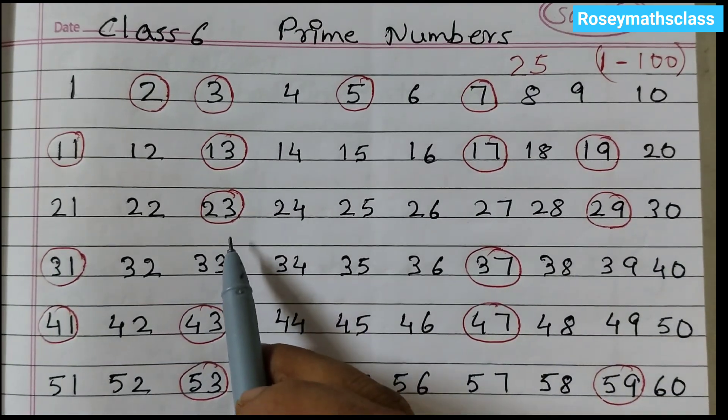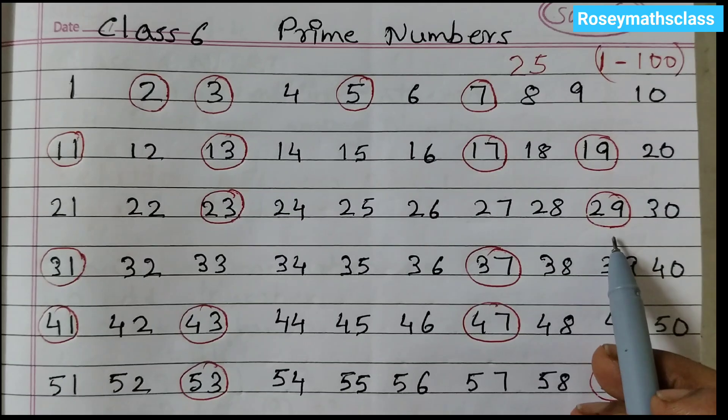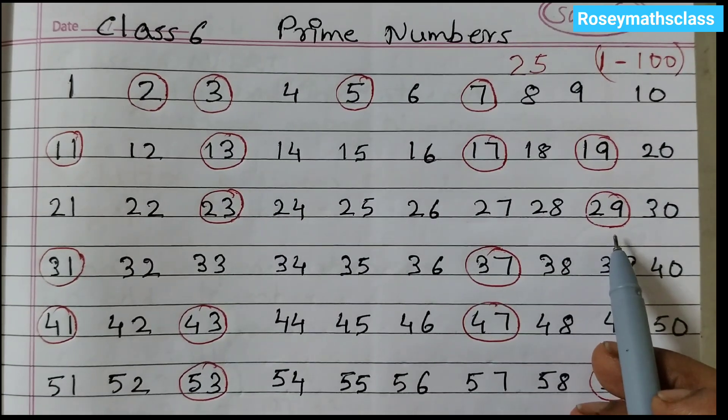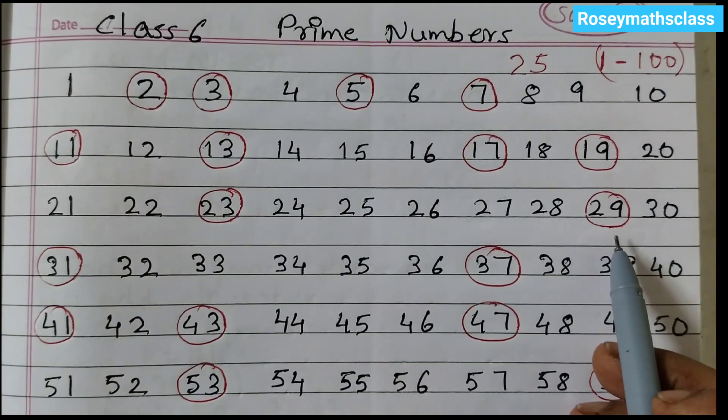Now the ones that I have circled here, 23 and 29, these are prime numbers. So that means there are two prime numbers from 21 to 30.